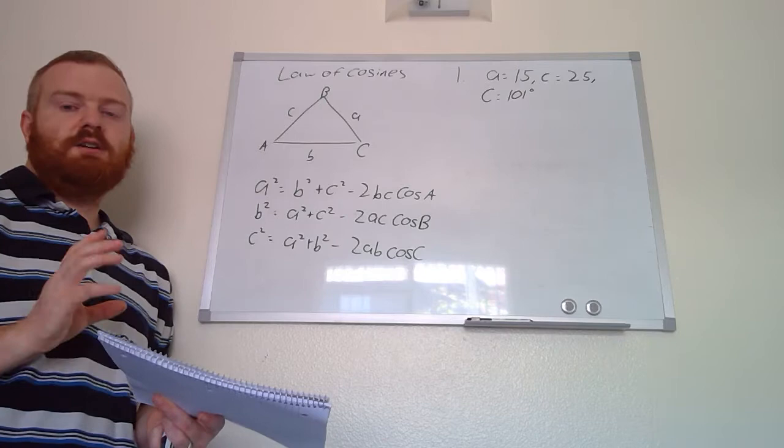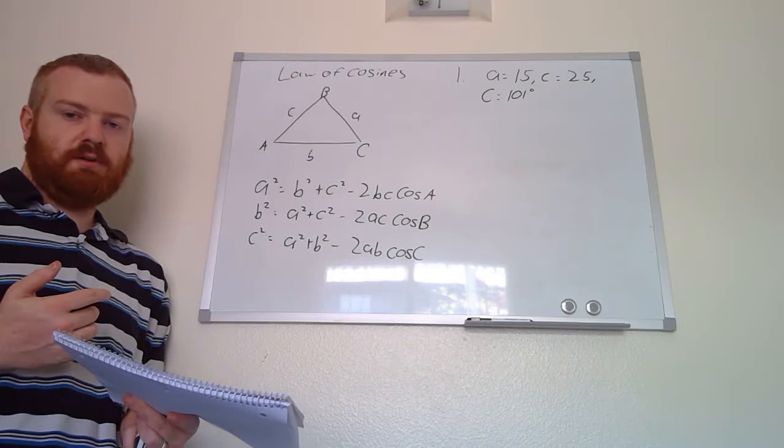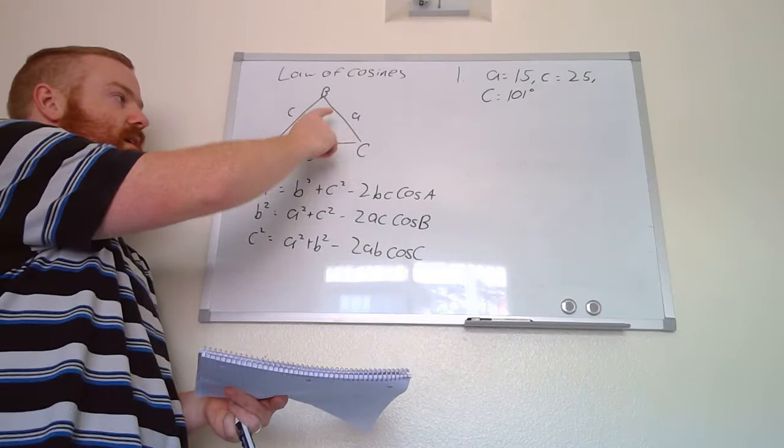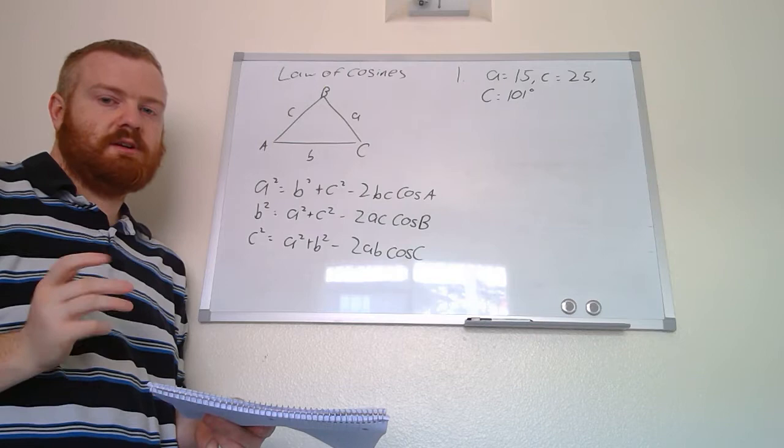The Law of Cosines is a formula we can use if we do not have that pair — so if we have an angle but do not have the opposing side length, or if we have a side length but not the opposing angle. For a generic triangle ABC with side lengths a, b, and c, the formula for the Law of Cosines is written three different ways depending on what you're solving for.